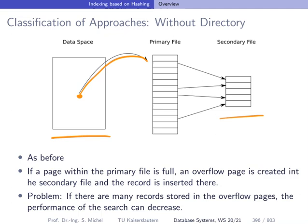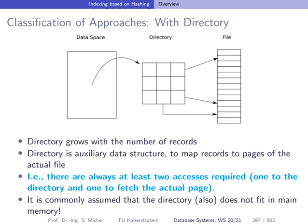The alternative to this is to use a separate directory. So the data space is here again on the left side. The hash function is pointing to a certain position inside the directory, for instance, here. And the directory is doing the mapping to the actual location inside the file. The directory also grows or has to be adapted to the number of records. And we assume that also later on, when we talk about approaches with directory, that this directory does not fit in main memory itself.